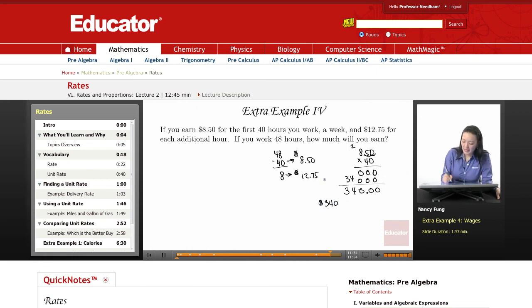Now, for the last 8 hours of the work week, you will be making quite a bit more at $12.75. So let's take $12.75 and multiply with 8. Count your decimal places, two places, two places, so $102.